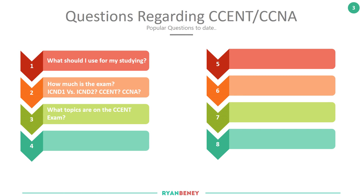Moving on to question number four: how long should I study? This is very difficult to answer because it really depends on you as an individual and your background. It also depends on how committed you are to getting the CCENT and CCNA. A lot of people say they're committed, study hard for a week every day, and then burn themselves out. You need to know it's a marathon, not a sprint. Some people will take a month, some will take six months. Consistency is the goal — don't think you should get it done in one or two months, and don't be alarmed if it takes three months. Just pace yourself, take your time, and be consistent. Doing a bit every other day is more than enough to obtain the certification.